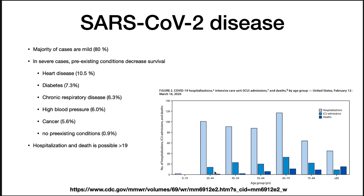Deaths were lower in younger age groups and increased over time. It doesn't seem to be age so much as the accumulation of pre-existing conditions — heart disease, diabetes, chronic respiratory disease, etc. — that drives mortality. However, even if you don't have any pre-existing conditions, your risk of death after infection is 0.9%.